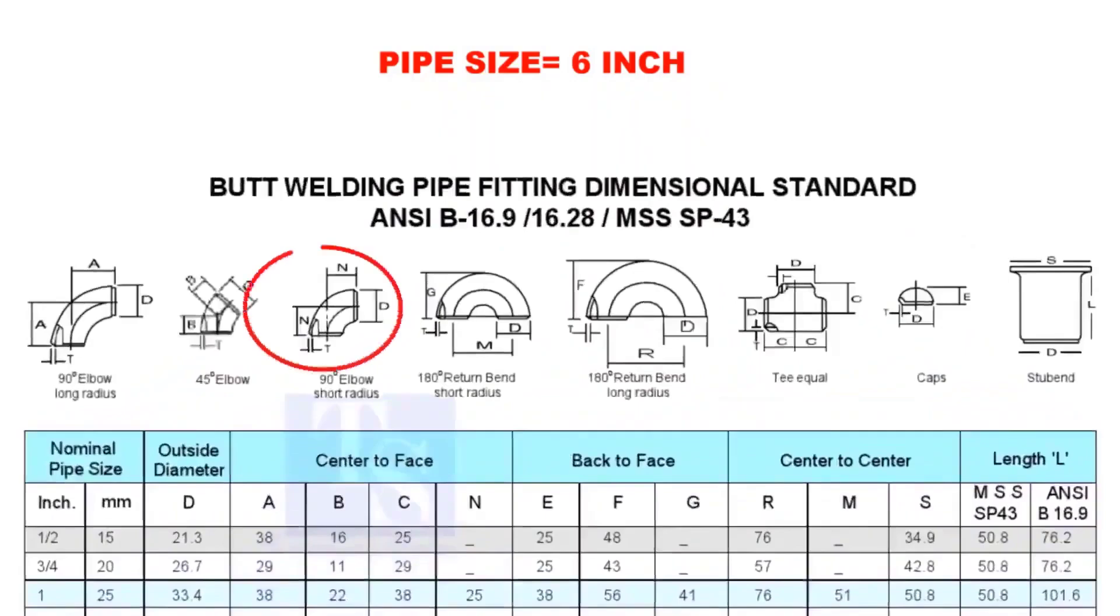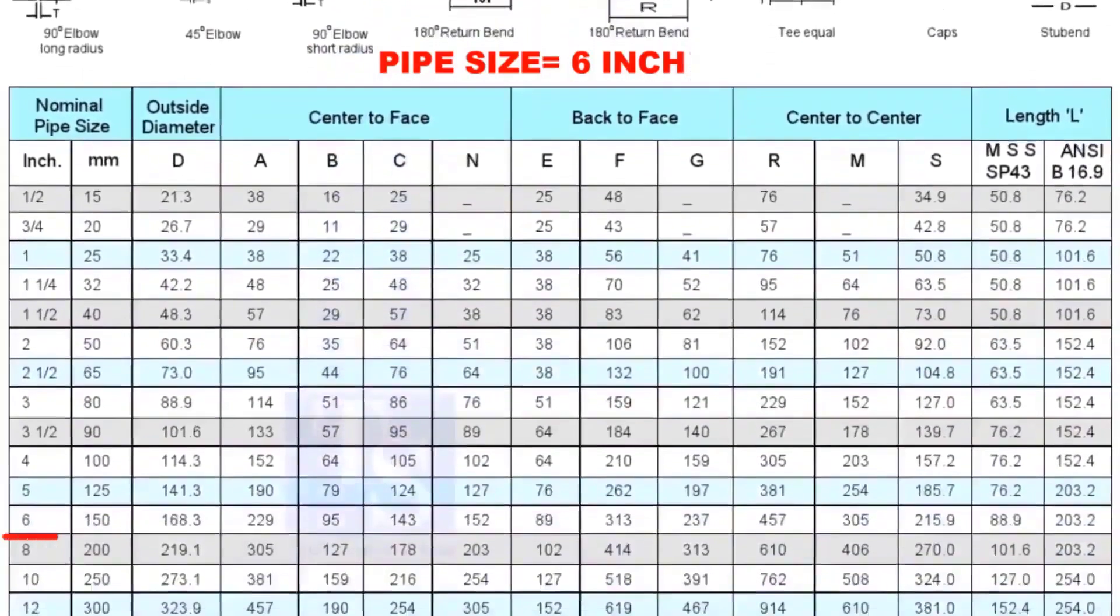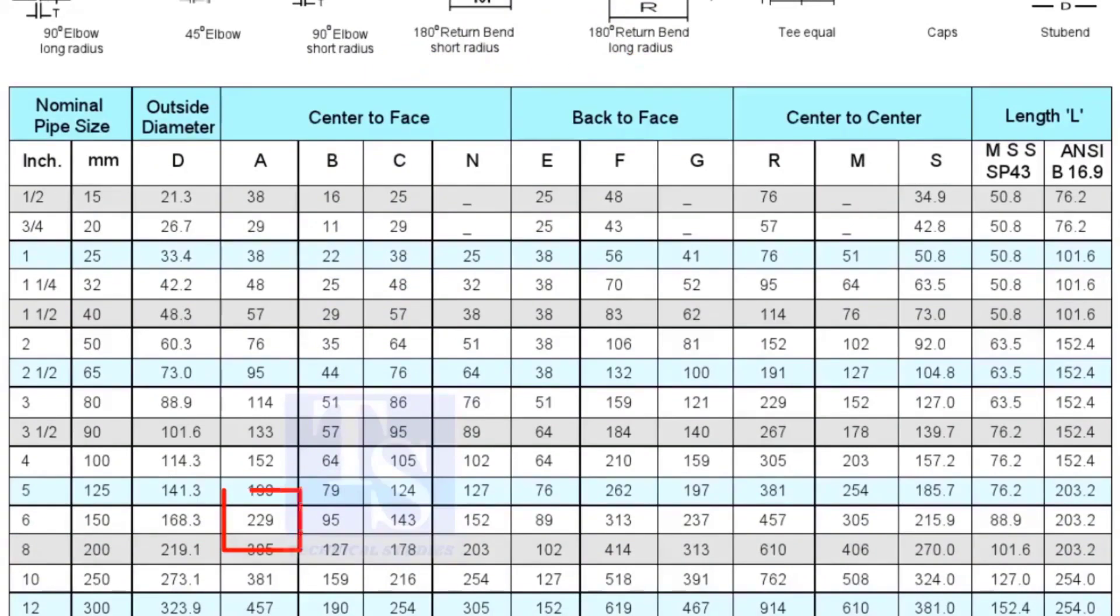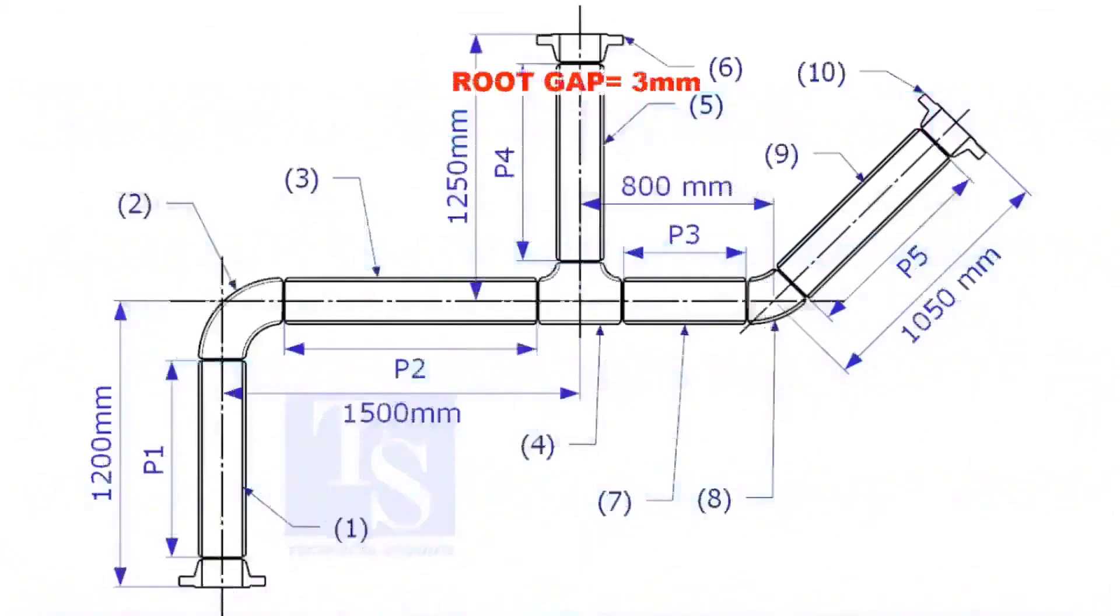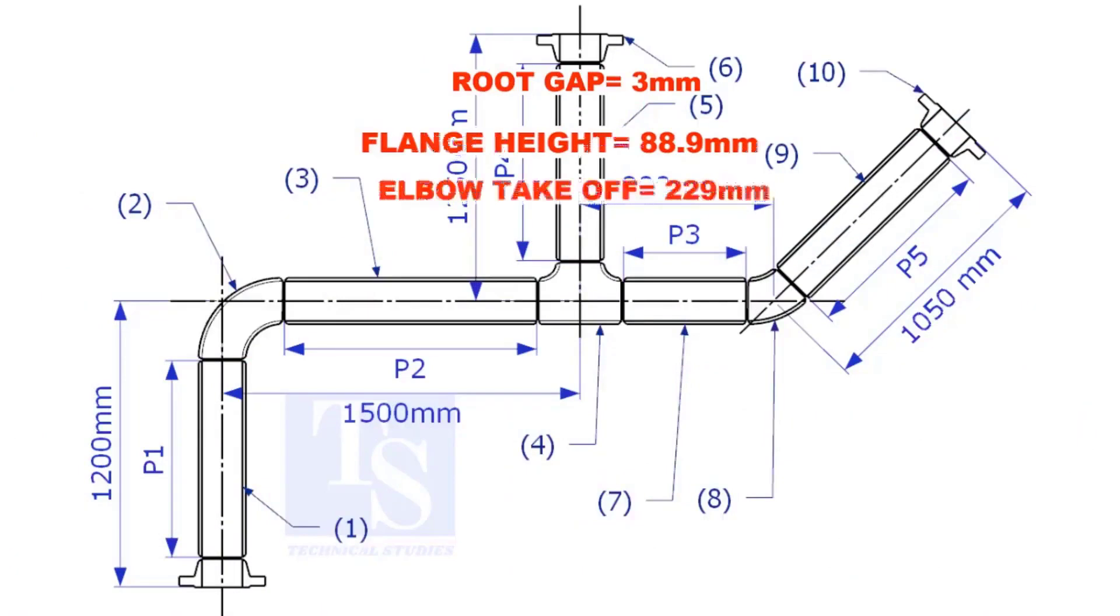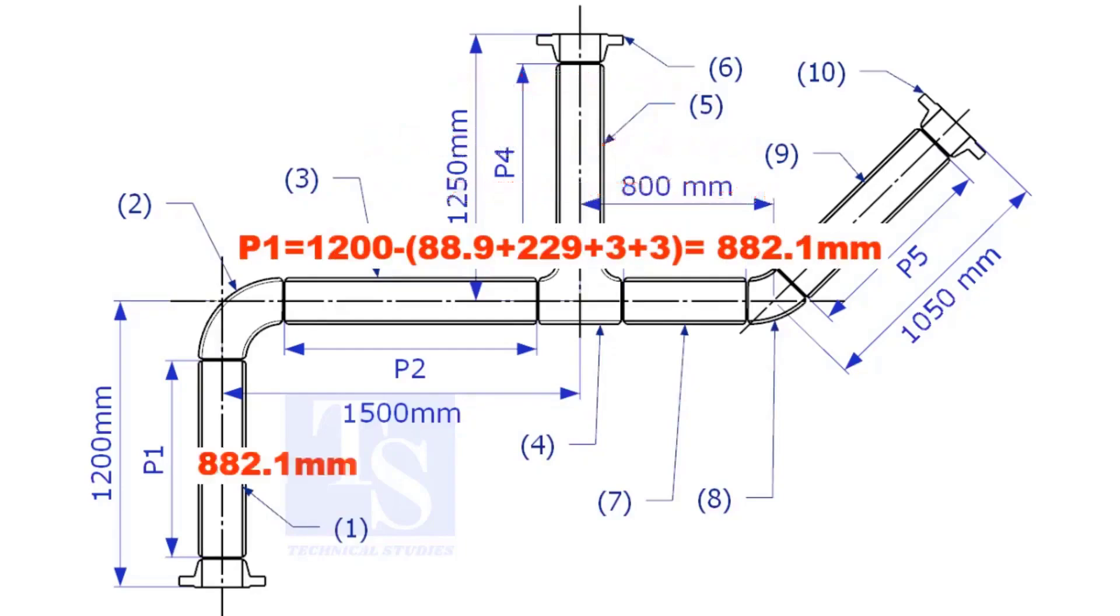Check the takeoff length of the elbow. It is 229mm. Assume the root gap is 3mm. Substitute the sum of the height of the flange, elbow takeoff, and 2 root gaps from the total length of 1500. Length of pipe P1 is 882.1mm.